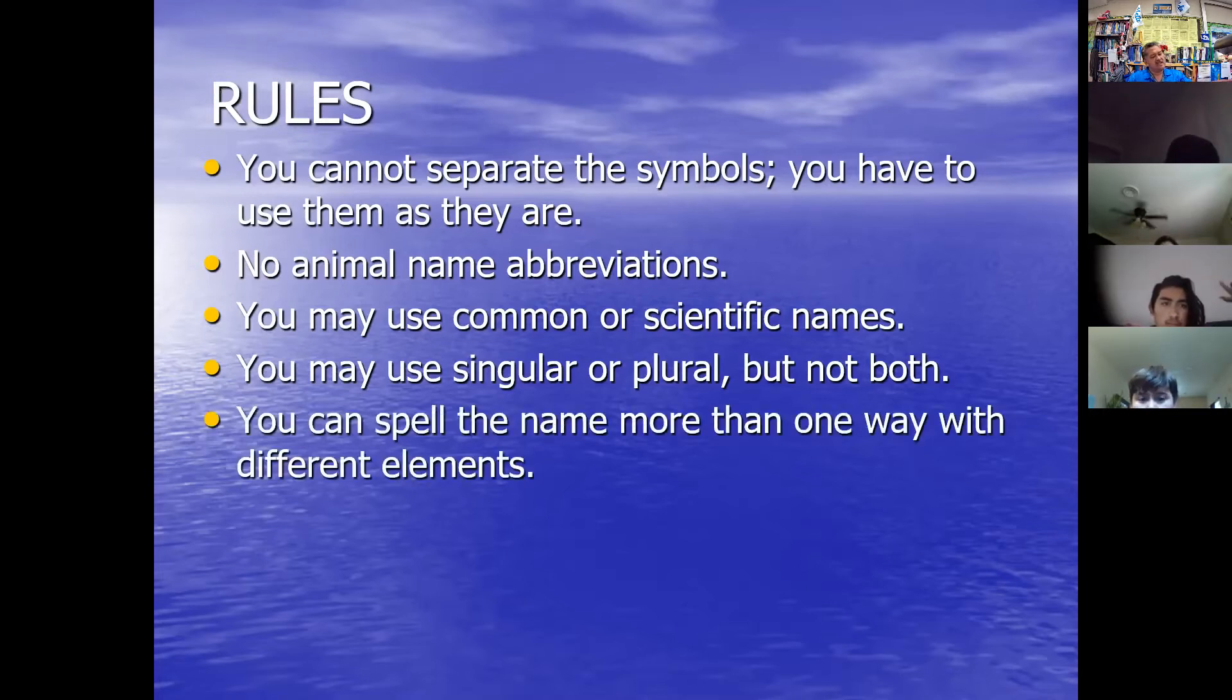If you can spell the animal name in a different way with different elements, then you are allowed to put that animal on twice. Like if you can spell bear one way with beryllium and argon, or you spell bear with a different combination of elements, like you start with boron, which is just letter B. So if you can spell the name more than one way with different elements, then do it.